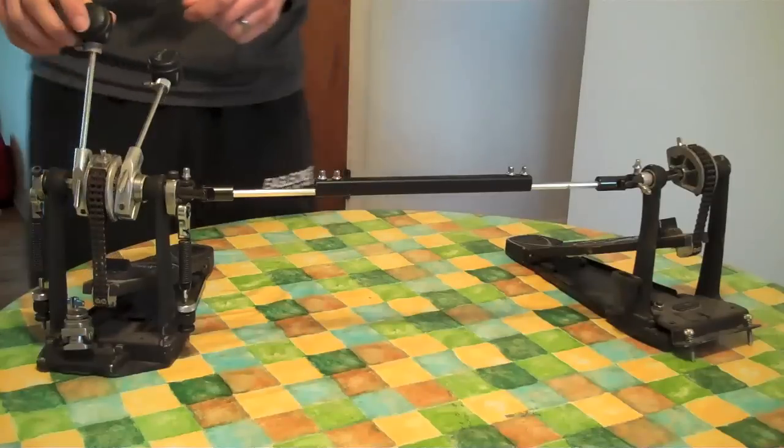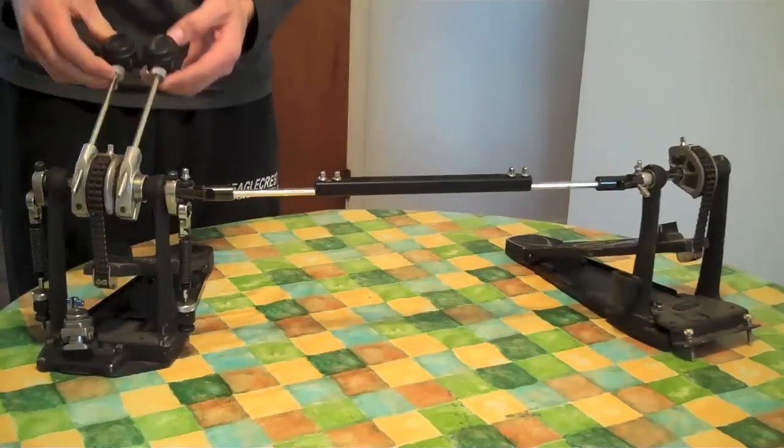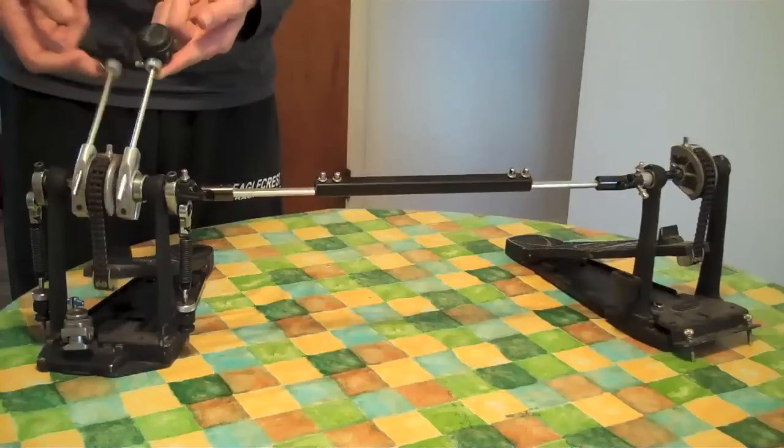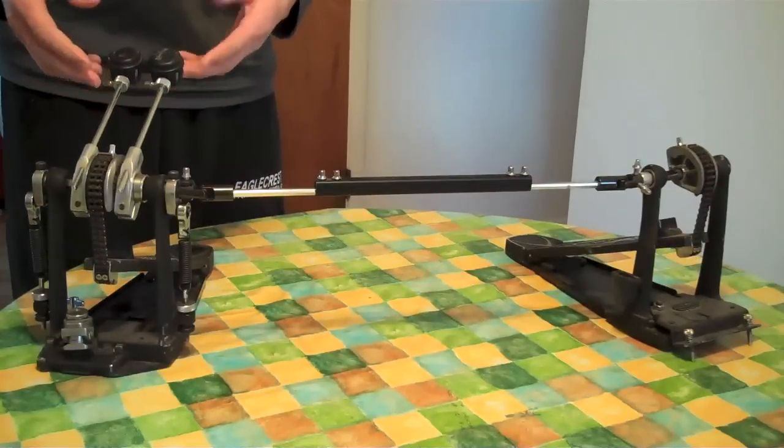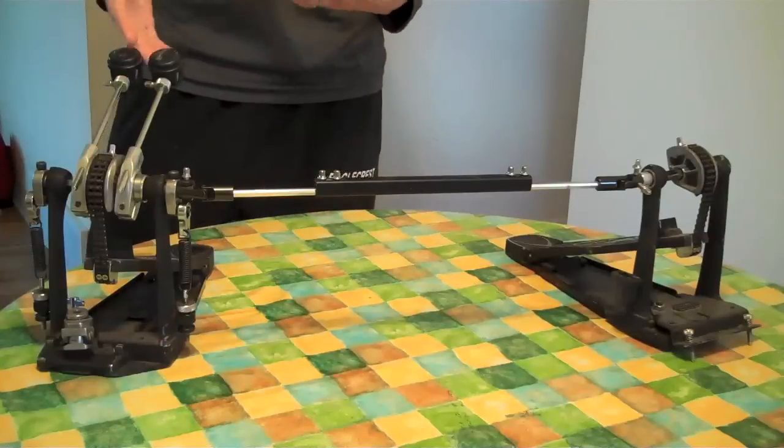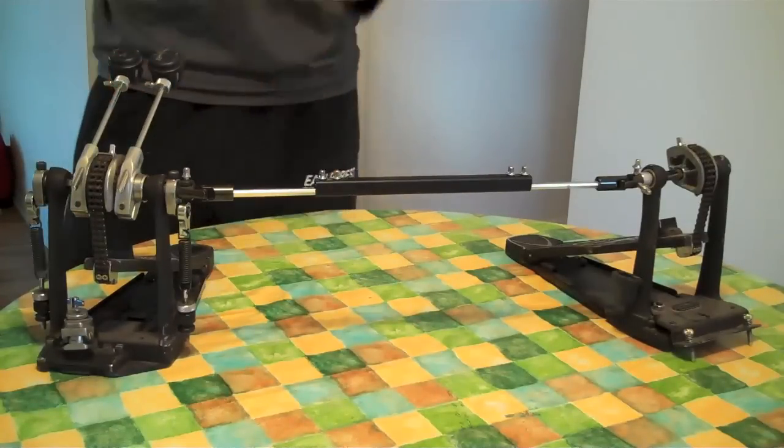Also have, you can see, the weights that come with it all the way at the top. The more weight you have at the top of the beater, the more inertia. So for single strokes, which is what I typically play, that's the best setup for me. If you play a lot of doubles, maybe think about dropping them down or taking them off.